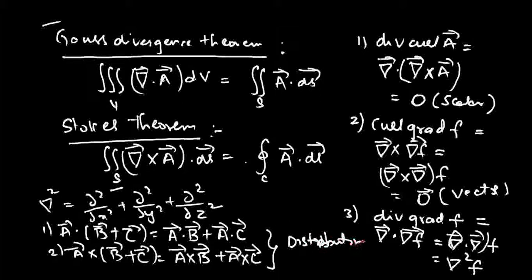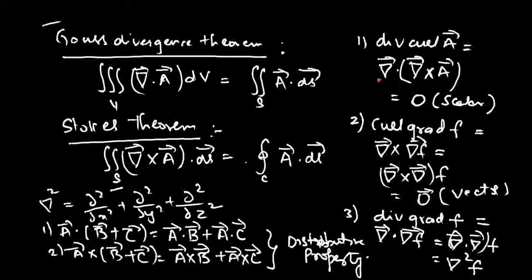This is the distributive property of vector addition. The del operator can replace A-bar, so del dot (B-bar + C-bar) or del cross (B-bar + C-bar) follow the same property. The del operator is not different from any other vector — it is simply a representation with components (∂/∂x, ∂/∂y, ∂/∂z) and should be treated as a normal vector.